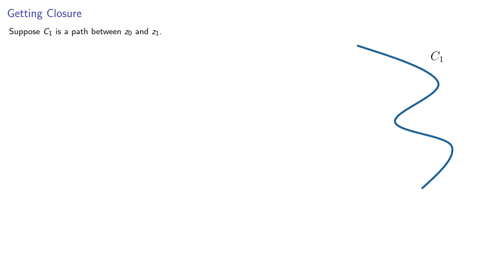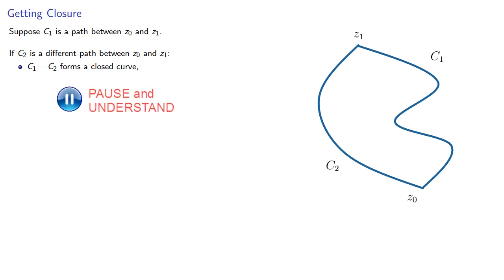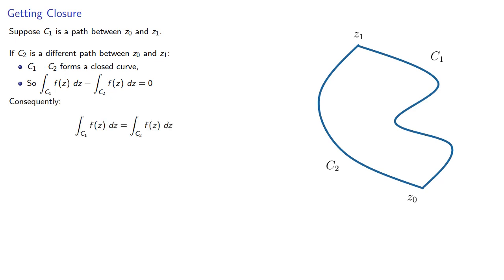Suppose C1 is a path between z0 and z1. If C2 is a different path between z0 and z1, then C1 minus C2, that's going along path C2 backwards, forms a closed curve. So the difference of the integrals is zero. Consequently, the integral along C1 is equal to the integral along C2.